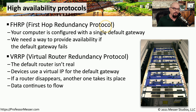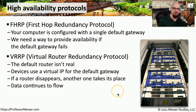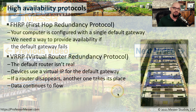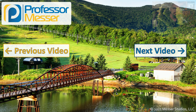Another high availability protocol is the Virtual Router Redundancy Protocol, or VRRP. This uses a virtual IP address associated with a router, and if that router fails, the virtual IP address is moved to a different router on the same subnet. This allows you to maintain uptime and availability even if you happen to change the hardware being used as the router.